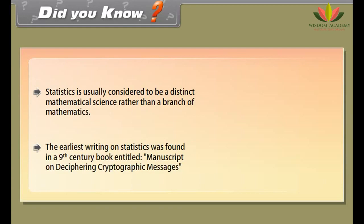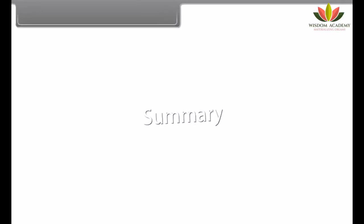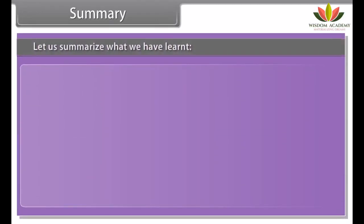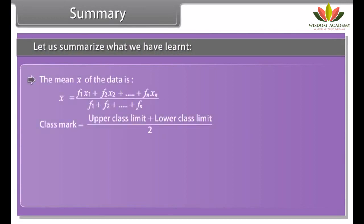Did you know? Statistics is usually considered to be a distinct mathematical science rather than a branch of mathematics. The earliest writing on statistics was found in a 9th century book entitled 'Manuscript on Deciphering Cryptographic Messages.'